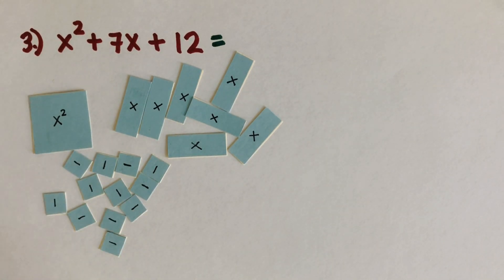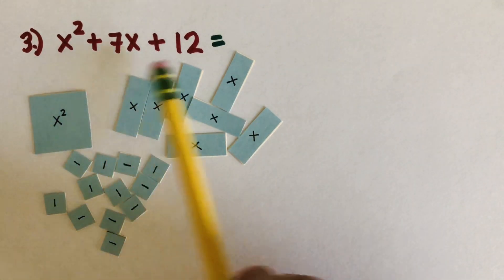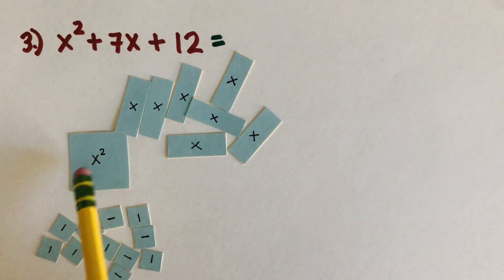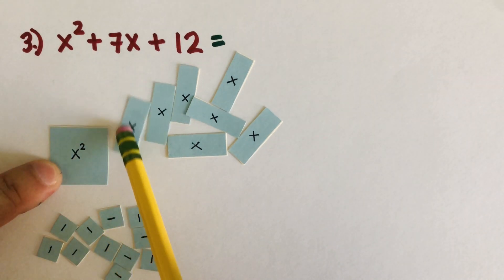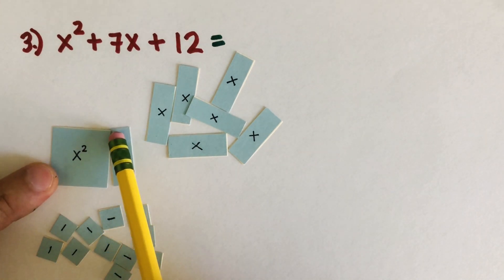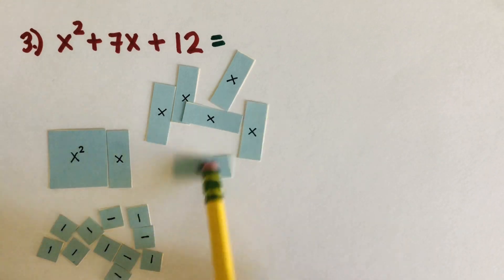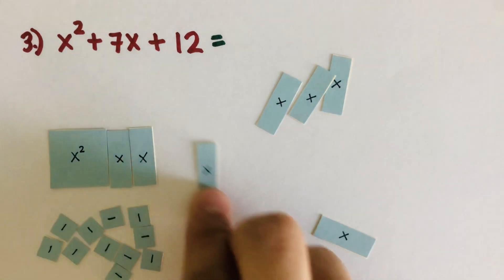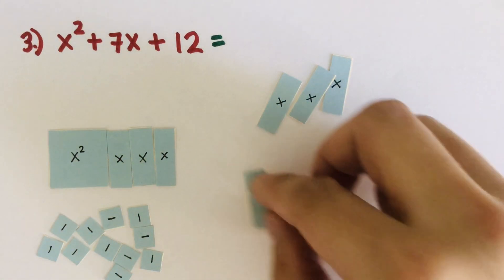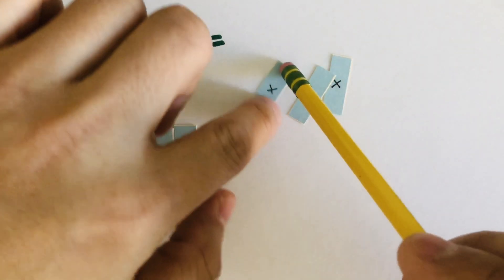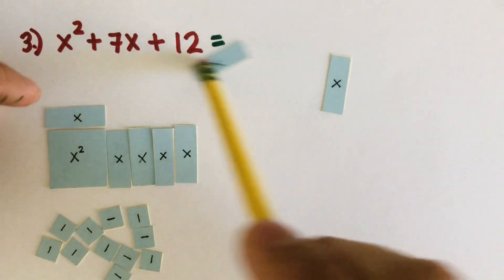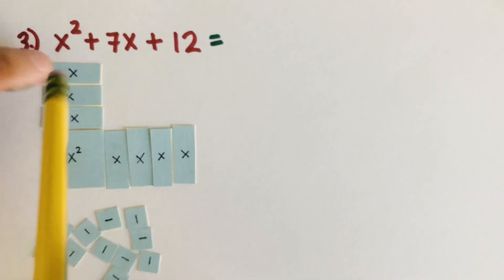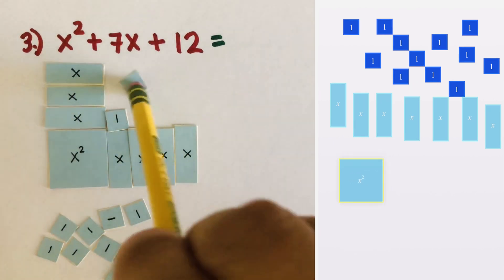Again, our target is to create a rectangle out of these tiles. The first trick is to have the x squared on the lower left of the rectangle, then grow from there. I'll take one x here, then another x, and a few more x's. Our target is to create a rectangle, and this is the shape of the rectangle that we wanted.